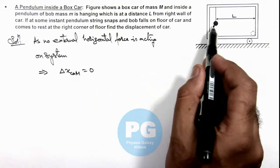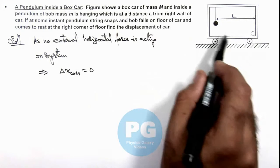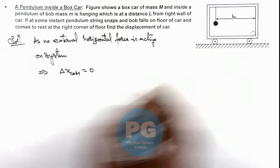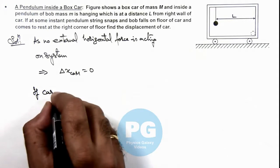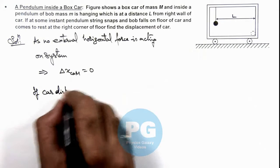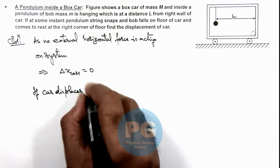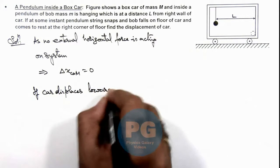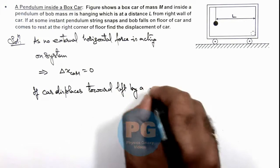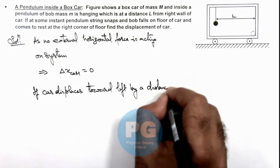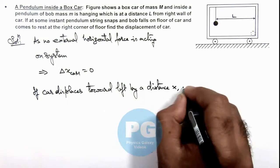So if the bob is displaced with respect to car by a distance L, and if the car displaces toward left by a distance x, we can apply this principle.